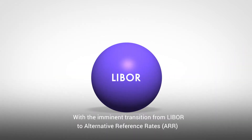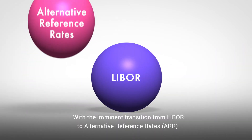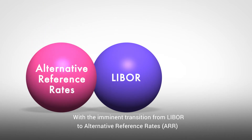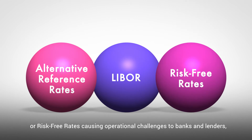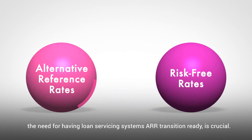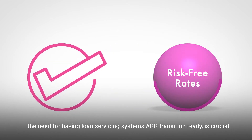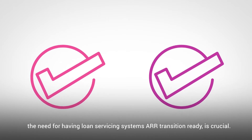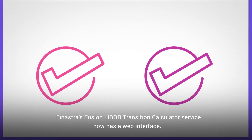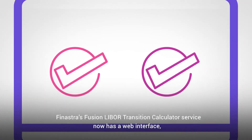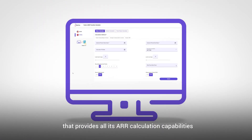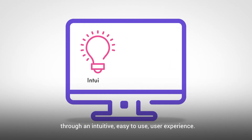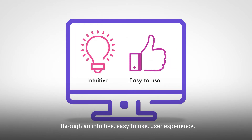With the imminent transition from LIBOR to Alternative Reference Rates (ARR), or risk-free rates causing operational challenges to banks and lenders, the need for having loan servicing systems ARR transition ready is crucial. Finastra's Fusion LIBOR transition calculator service now has a web interface that provides all its ARR calculation capabilities through an intuitive, easy-to-use user experience.